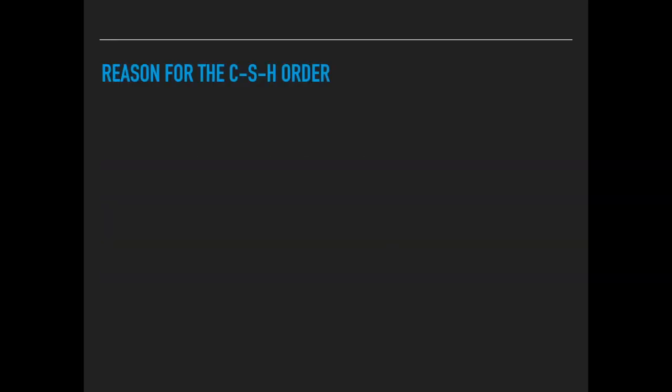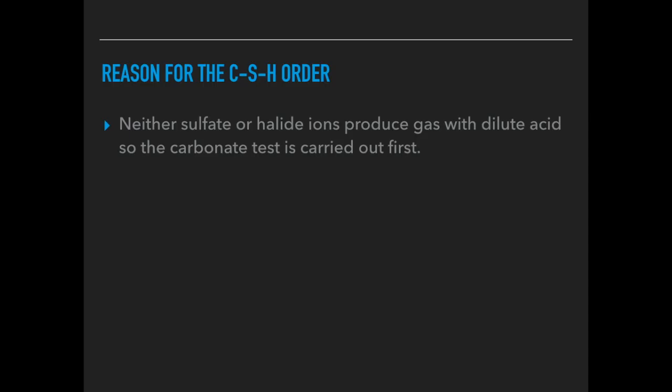The reason for the CASH order is as follows. The carbonate test is done first because neither sulphate nor halide ions produce gas when dilute acid is added. If you add dilute acid to test tubes containing carbonate, sulphate, halide, or even ammonium ions, only the carbonate ion produces a gas — carbon dioxide. Once the carbonate is identified, it is eliminated from any further tests.